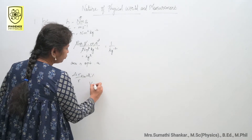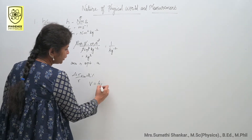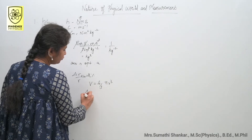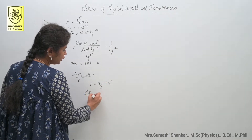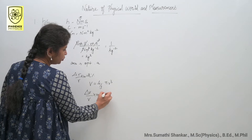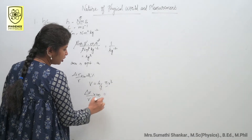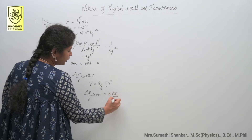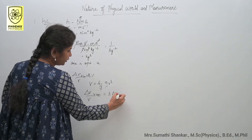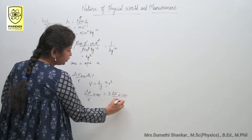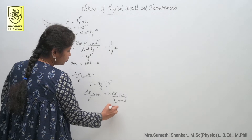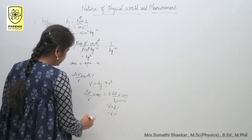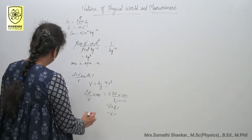What is the formula for volume of the sphere? It is (4/3)πr³. So if you want to find delta v by v into 100, the constants 4/3 and π are left out. You can write it as 3 times delta r by r into 100. That is 3 into 2%, which gives 6%. The answer is option D.